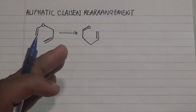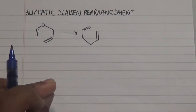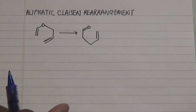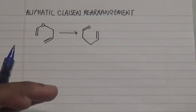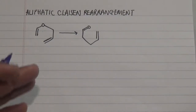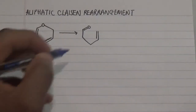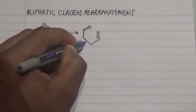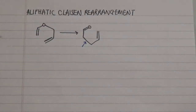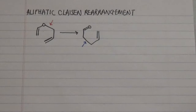In this video we're going to dig deep into the aliphatic Claisen rearrangement reaction, also known as a 3,3-sigmatropic rearrangement. This 3,3-sigmatropic rearrangement is due to the formation of a new sigma bond from the loss of an old sigma bond.